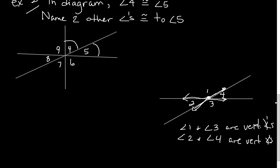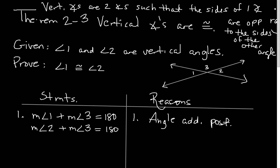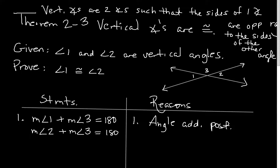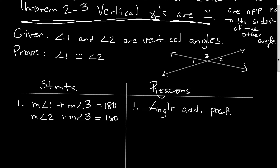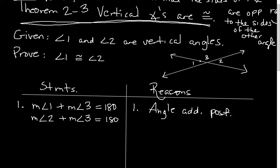Now let's talk about Theorem 2-3: vertical angles are congruent. This is a really important theorem — write it in your theorem area. We're going to prove this theorem. It's given that angle one and angle two are vertical angles, and we want to prove that angle one equals angle two. We're going to skip up to where we use the fact that angles one and three add up to 180.